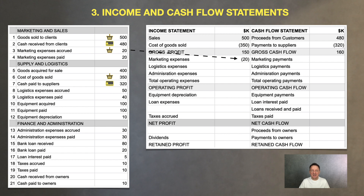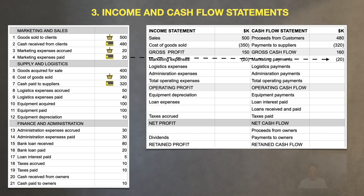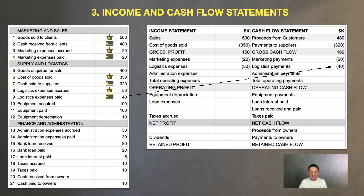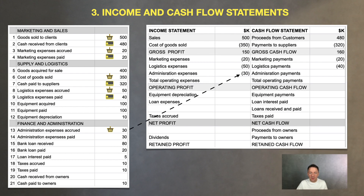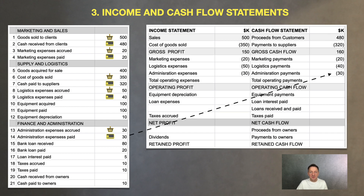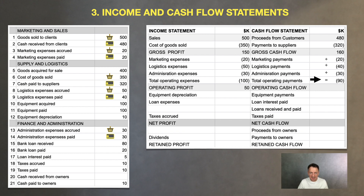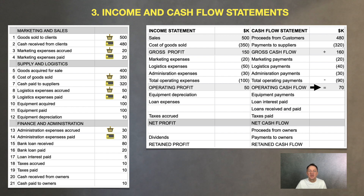Let's talk about operating expenses and overheads. We reflect only accrued expenses in the income statement, so we have $20K on marketing accrued. If all these expenses were paid, that goes to the cash flow statement. The logistic expenses accrued is $50K; logistic expenses paid just $40K. $30K for administration accrued goes to the income statement; $30K paid transferred to the cash. So we have $100K as total operating overheads in the income statement. These expenses subtracted from the gross profit of $150K give us the operating profit of $50K. The total operating expenses paid were $90K, generating operating cash of $70K.